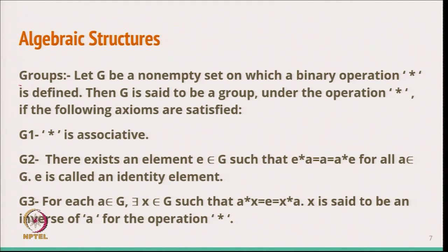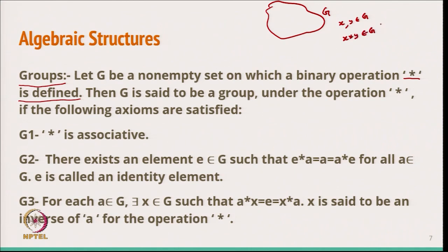After binary operations, we can discuss some algebraic structures that are very important for defining vector spaces. The first one I am going to define is groups. Let G be a non-empty set on which a binary operation star is defined — meaning if x and y belong to G, then x star y also belongs to G. Then G is said to be a group under the operation star if the following axioms are satisfied.